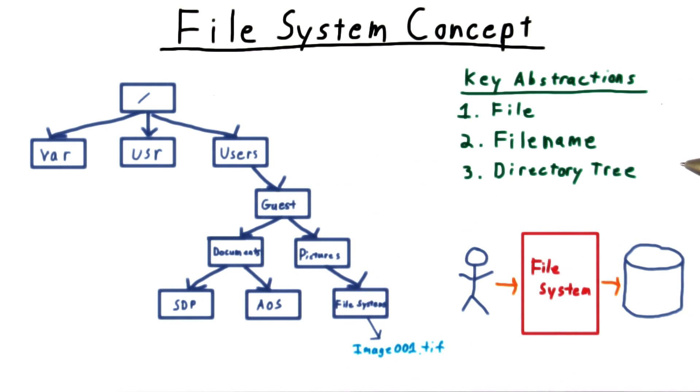Together, these three abstractions provide a convenient and almost universal interface for storing and retrieving data from mass storage. In this lecture, we'll talk about how this interface is implemented and some of the common optimizations. We'll focus on the disk medium, but many of the ideas we discuss apply to other media as well.